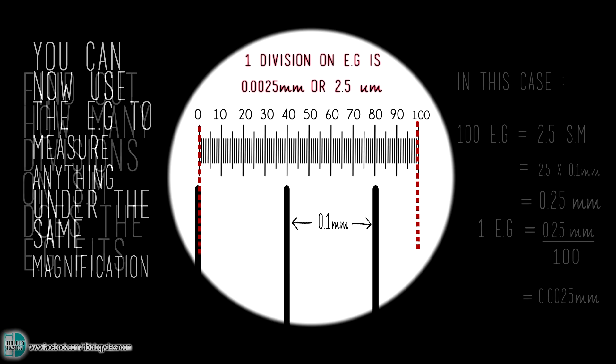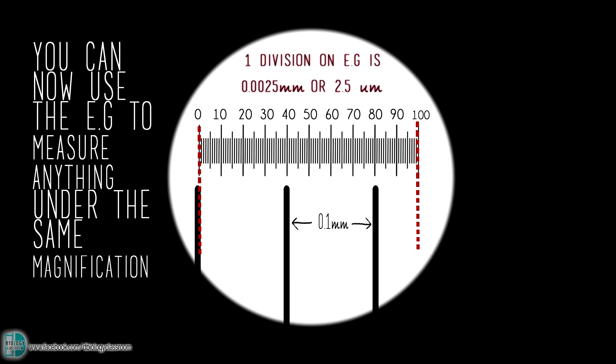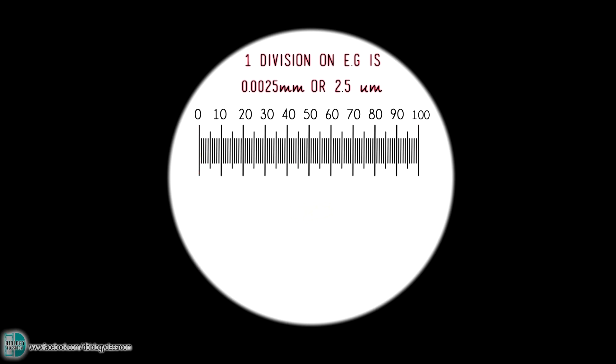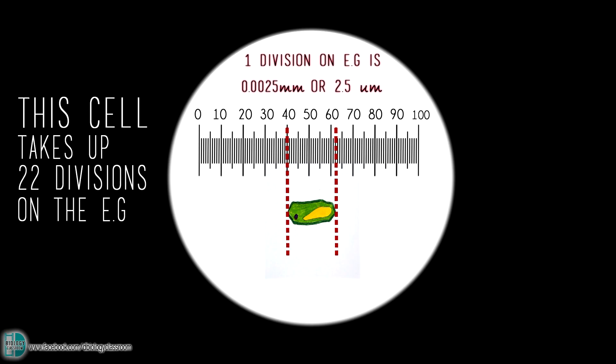If you remove the stage micrometer and observe a specimen under the same magnification, you can now use the eyepiece to measure its size. For example, this plant cell takes up 22 divisions on the eyepiece graticule. 22 times 2.5 micrometers is 55 micrometers. So the length of this cell is 55 micrometers. However, if you change the magnification, you need to calibrate the eyepiece graticule again.